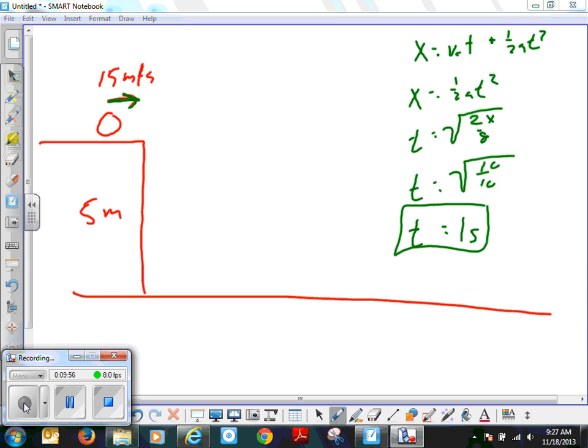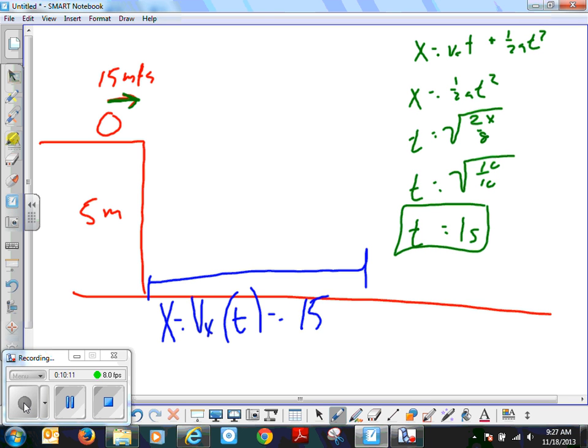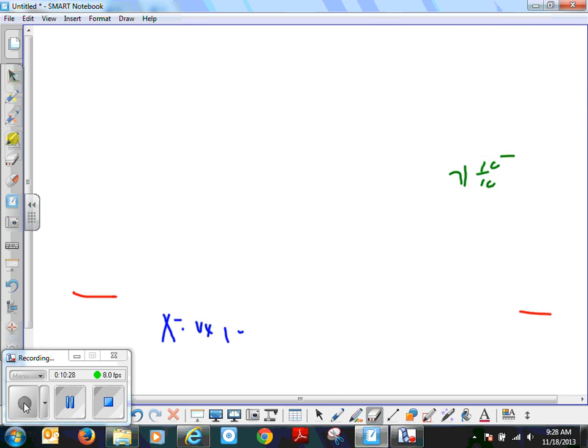And then after you tell me that, can you tell me where it's going to land? Well, x equals the velocity in the x direction, which does not change, times time. So in this case, it's 15 times 1, 15 meters. Can you do that for the test? Okay, so that's one of the three free-response questions.